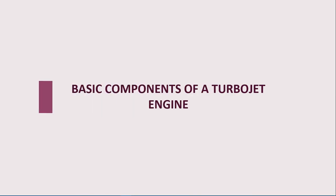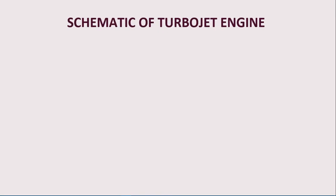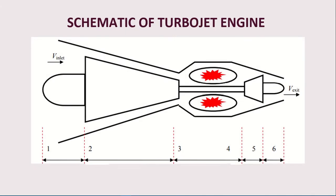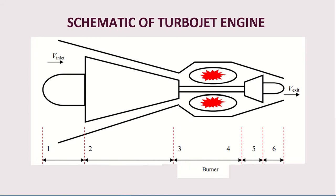Basic components of a turbojet engine. The first component in a turbojet engine is the diffuser, second is the compressor, third is the burner, fourth is the turbine, and the last one is the nozzle.